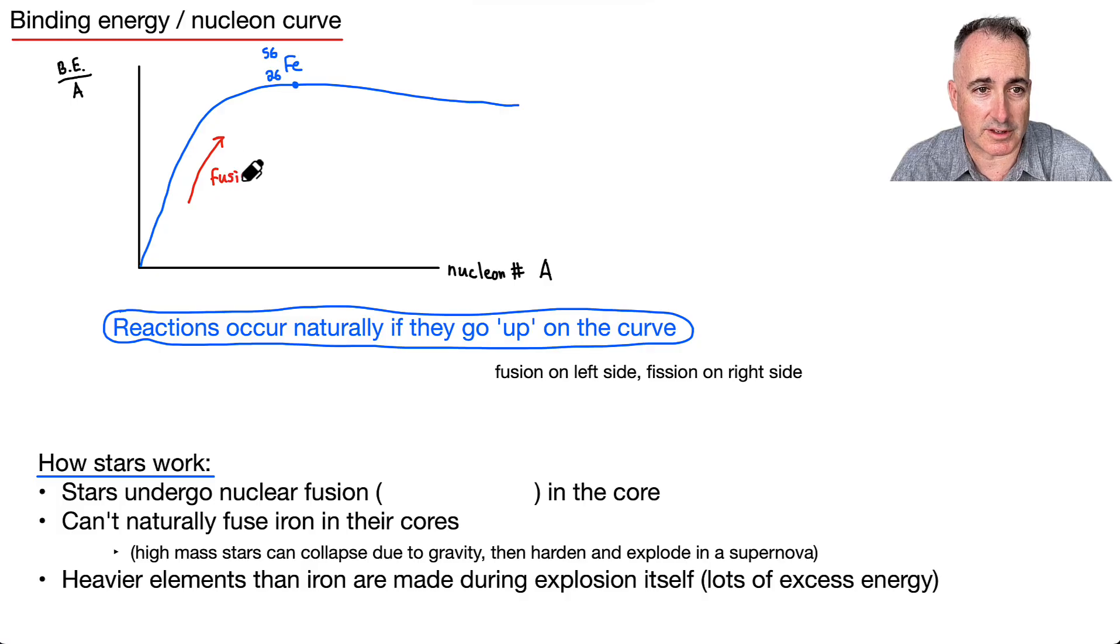So fusion is going to be sort of energetically favorable. It'll happen on its own with light things that make heavier things. And same way, if you're going up here, for example, well, then it's going to go left. So in this sense right here, we'll say fission is energetically favorable. That's when you go left, for example. So I said fusion on the left side, fission on the right side.